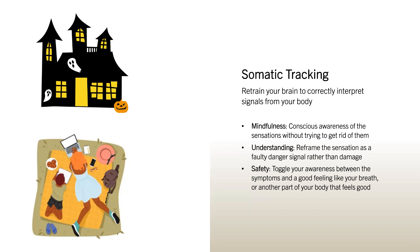For example, if we're in a haunted house and our best friend taps us on the shoulder, we'll overreact because we interpret the signal through fear. Whereas if we're having a nice picnic and our friend taps us on the shoulder in the exact same way, we don't overreact because we're not viewing it through a lens of fear. The mindfulness component is consciously paying attention to the sensations without trying to get rid of them — recognizing these are normal sensations getting misinterpreted, just like the tap on the shoulder in the haunted house. The understanding component is knowing that your body is not damaged, reframing the sensation as a faulty danger signal. Then focus your attention on safe signals like your breath, other areas of your body that feel good, imagery, humor, a nice scent, joy. As you toggle your attention between the symptoms and the signals of safety, you are changing the neural circuit.